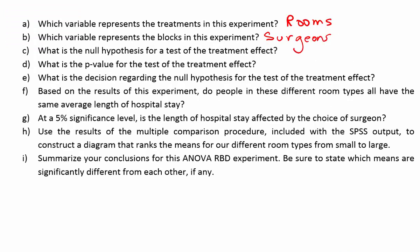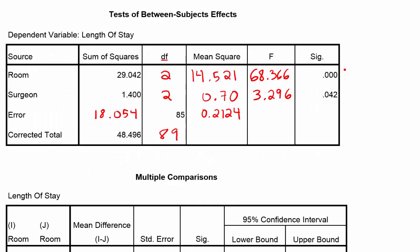In part C, they ask for the null hypothesis for a test of the treatment effects. The null hypothesis is simply that the mean for the rooms with no view equals the mean for the rooms with a picture view equals the mean for the rooms with an actual view. Then they ask for the p-value for the test of the treatment effect — that p-value was very small, 0.000, which is highly significant.